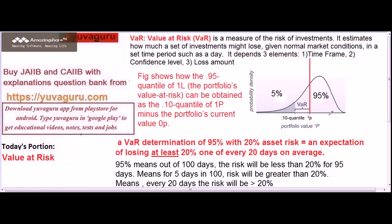Here is a graph showing normal market conditions. The 5% shown is the extraordinary condition — meaning 95% of the time we won't lose more than X amount, and 5% of the time we will be losing more than X amount. The same logic can be applied in normal distribution as well, which you might have seen in earlier videos. It depends on three elements: time frame, confidence level, and loss amount.